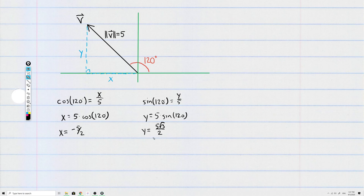This is a positive number. It makes sense that it should be a positive number because the second component, the y component, is going up above the axis.